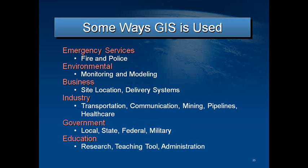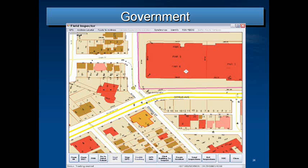GIS is also used for environmental, business, industry, government — which would be at all levels — and politics, which covers elections a lot. In the last presidential election, there was the map on TV. They were quite proud of it. That was GIS at work.